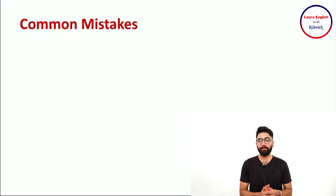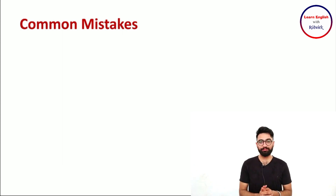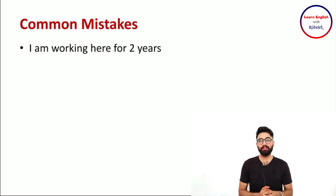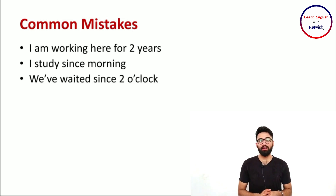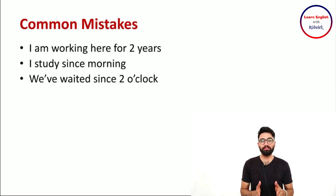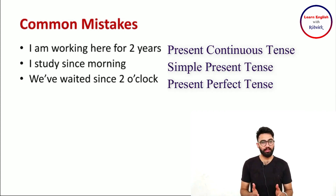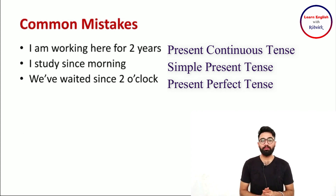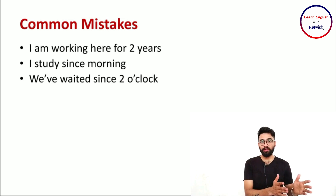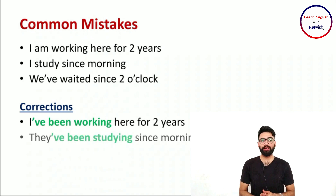Here are some common mistakes people make with this tense. Incorrect examples: 'I am working for two years' — this is present continuous tense. 'I study since morning' — this is simple present tense. 'We have waited since two o'clock' — this is present perfect tense. When we have a duration in the sentence, we must use present perfect continuous tense. All three sentences need to be converted to present perfect continuous tense to make them correct.